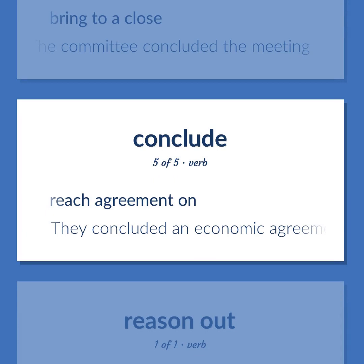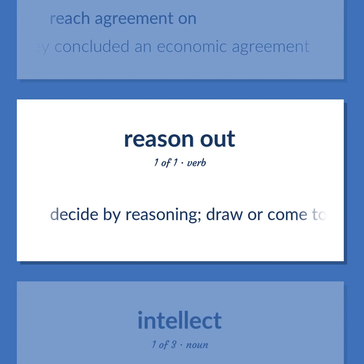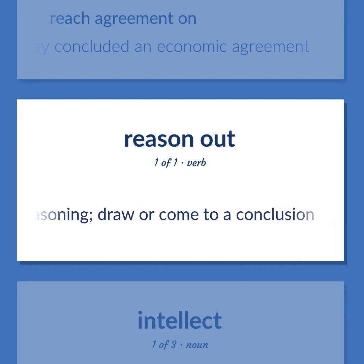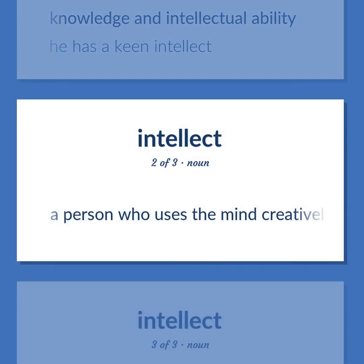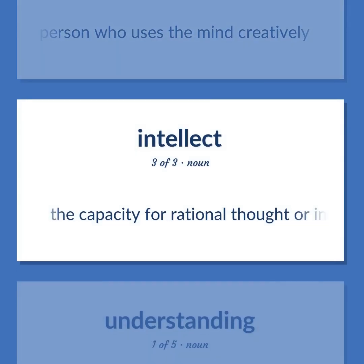Reach agreement on. They concluded an economic agreement. Decide by reasoning — draw or come to a conclusion. Knowledge and intellectual ability. He has a keen intellect. A person who uses the mind creatively. The capacity for rational thought or inference or discrimination.